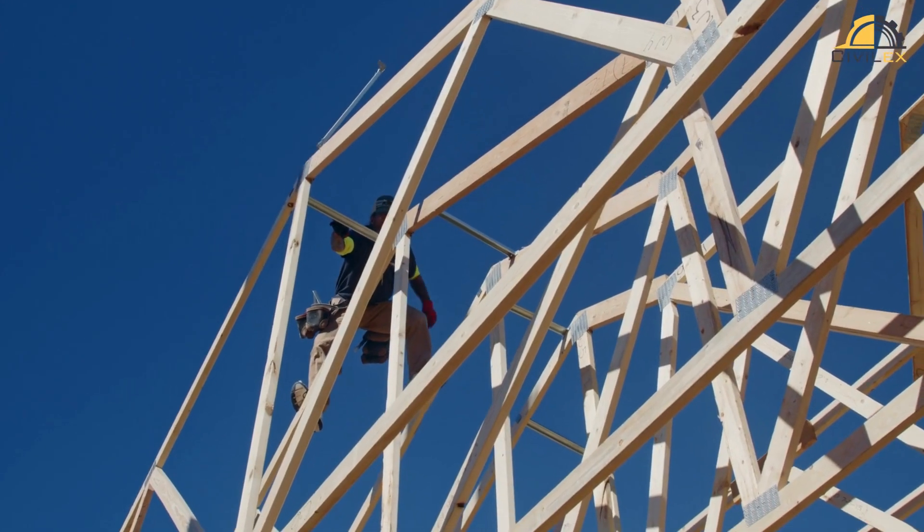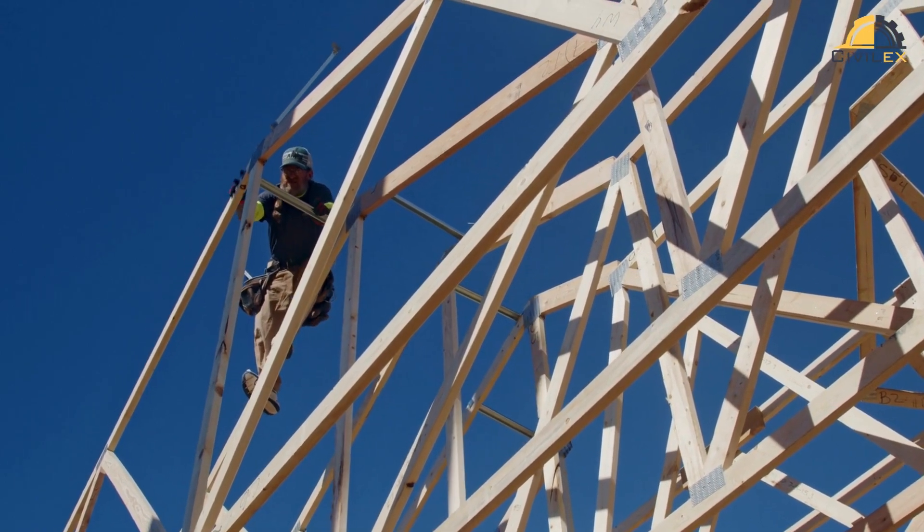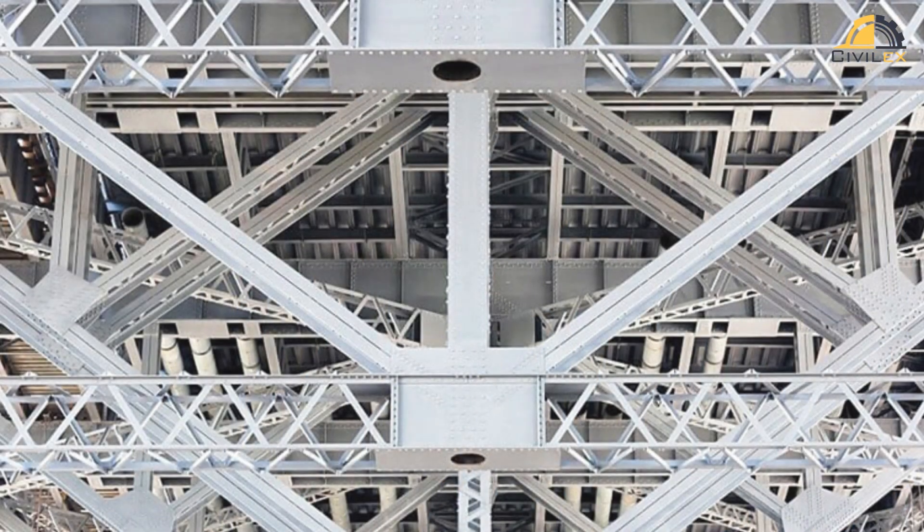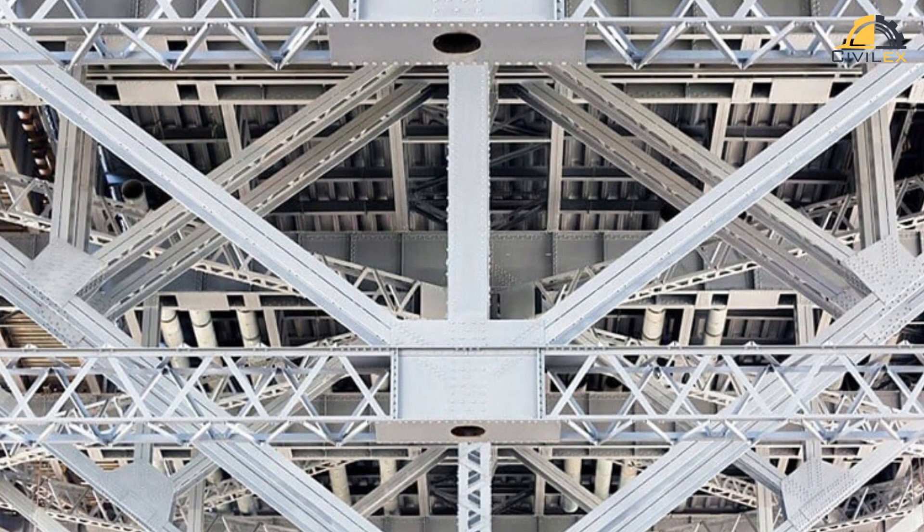Trusses are composed of interconnected members, and proper connections ensure their stability and load distribution. Bracing connections provide lateral stability and must resist both axial and lateral loads.